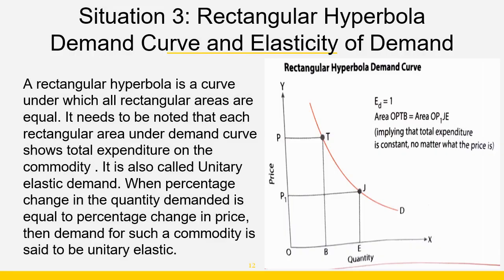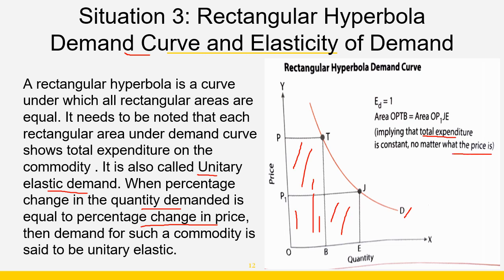Situation number 3 is a rectangular hyperbola demand curve, also known as unitary elastic demand, where percentage change in quantity demanded is equal to percentage change in price. Below this hyperbola curve, all rectangular areas are equal, and these areas represent total expenditure on the commodity — showing that total expenditure is constant no matter what the price is. A percentage change in price equals percentage change in quantity demanded.